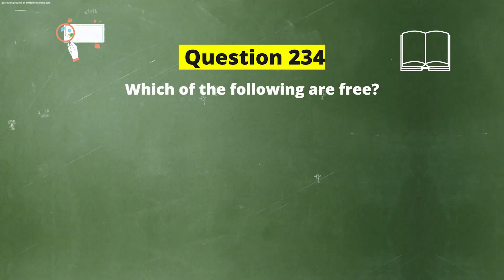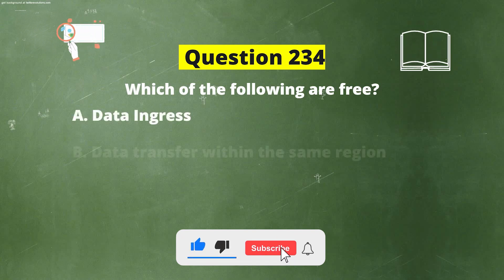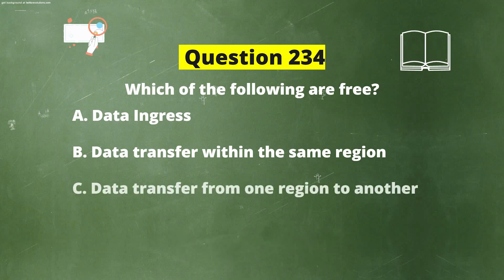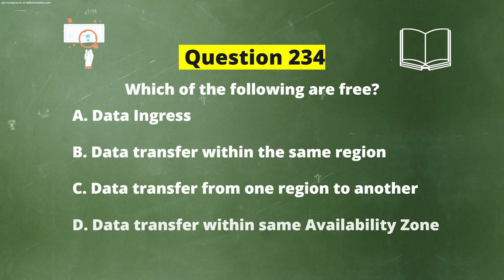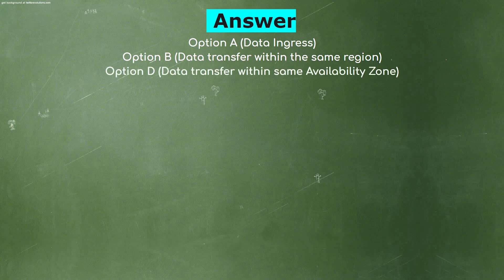Next question: Which of the following are free? The options are: A) Data ingress, B) Data transfer within the same region, C) Data transfer from one region to another, D) Data transfer within the same availability zone. The correct answers are option A, data ingress; option B, data transfer within the same region; and option D, data transfer within the same availability zone.